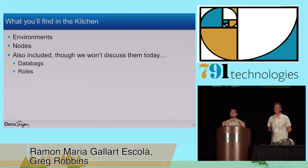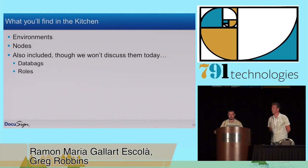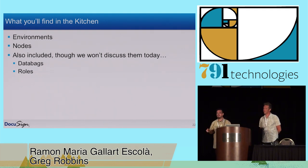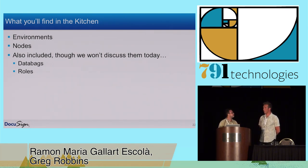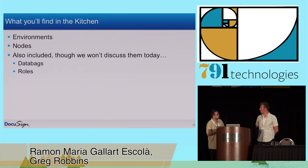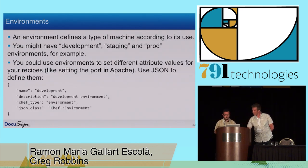So once we create the kitchen, what will we find in it? We will find environments and nodes basically — some other things like databags and roles that we're not going to talk about today, it would be a very long speech. The main things about the way we're using it are environments and nodes.